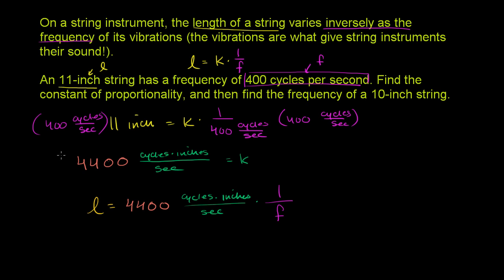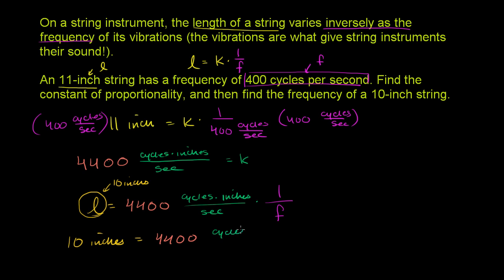We can use this to find the frequency of a 10-inch string. So now we're talking about a situation where our length is 10 inches. We get 10 inches equals 4,400 — these units are a little cumbersome — 4,400 cycles times inches per second, times 1 over the frequency.